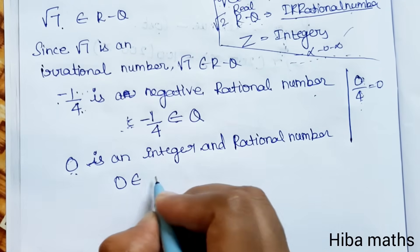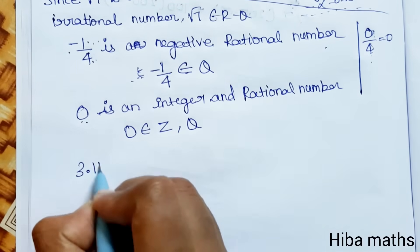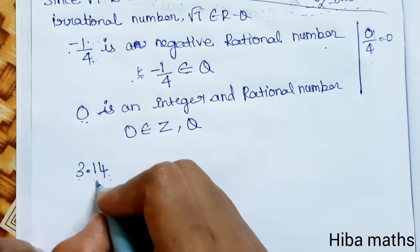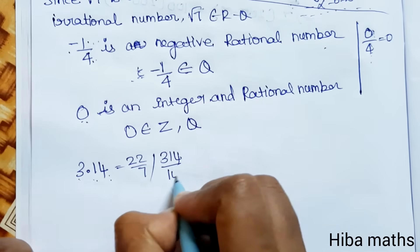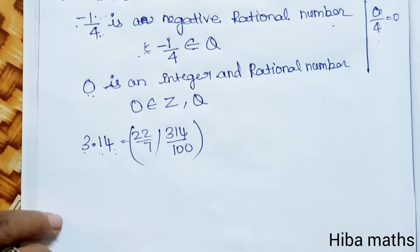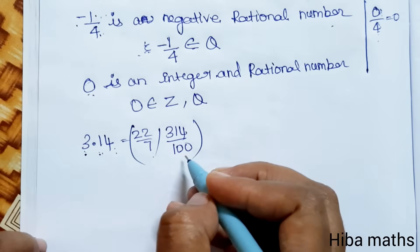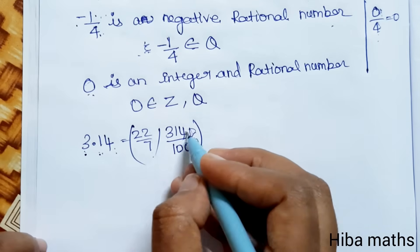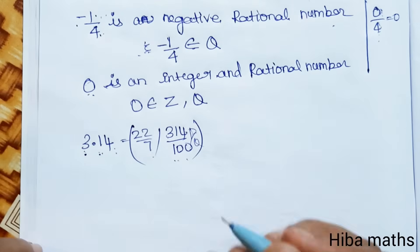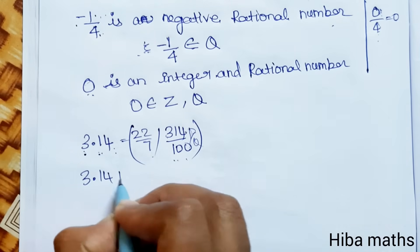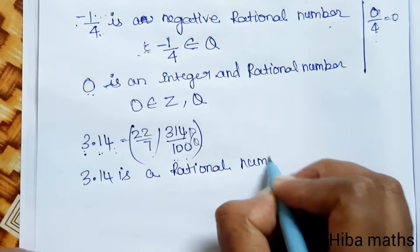Next is 3.14. Now 3.14 can be written as 314 by 100, which is in P by Q format. So 3.14 is a rational number. Therefore, 3.14 belongs to Q.